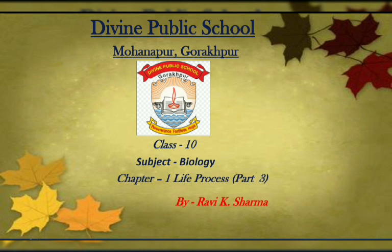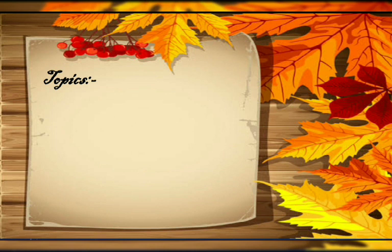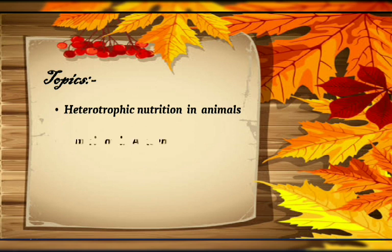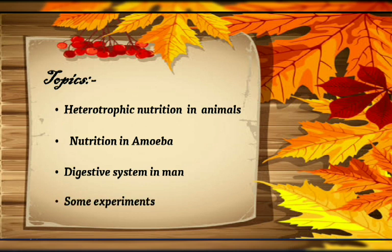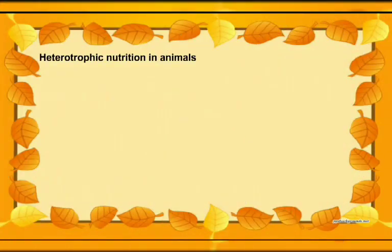The first and second parts are already uploaded; you can watch those. In this part, some topics we are going to explain: number one is heterotrophic nutrition in animals, next is nutrition in amoeba, and digestive system in man, and some experiments. These topics are most important — especially digestive system in man, which is the most important topic, so keep watching.